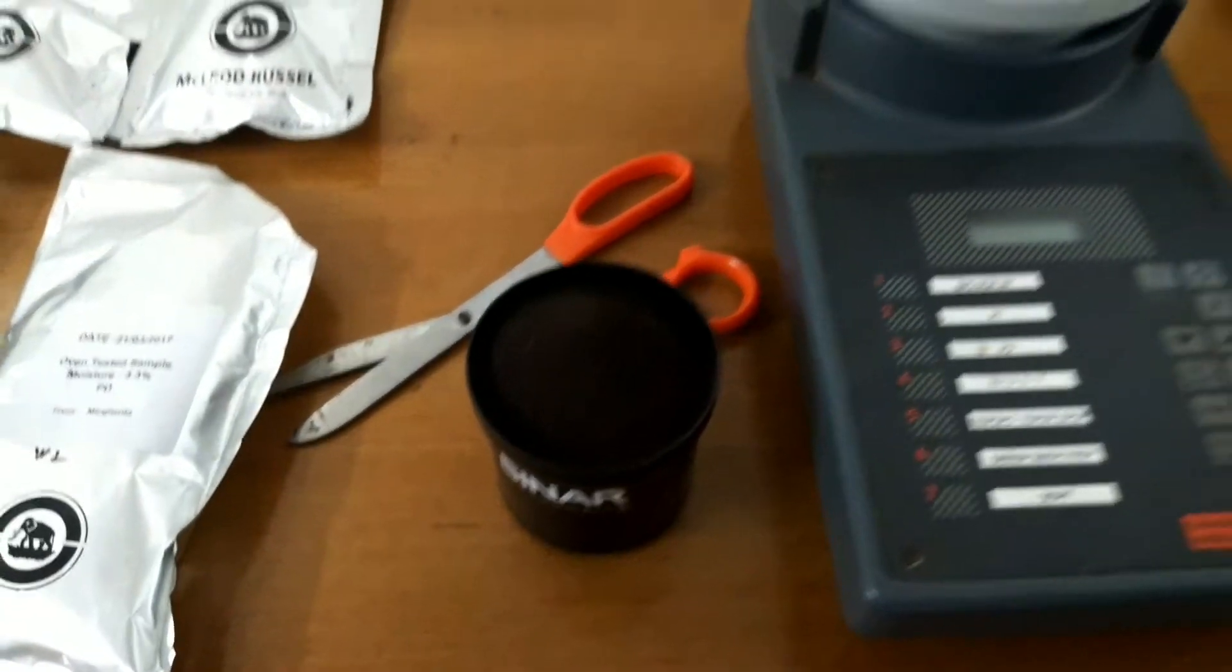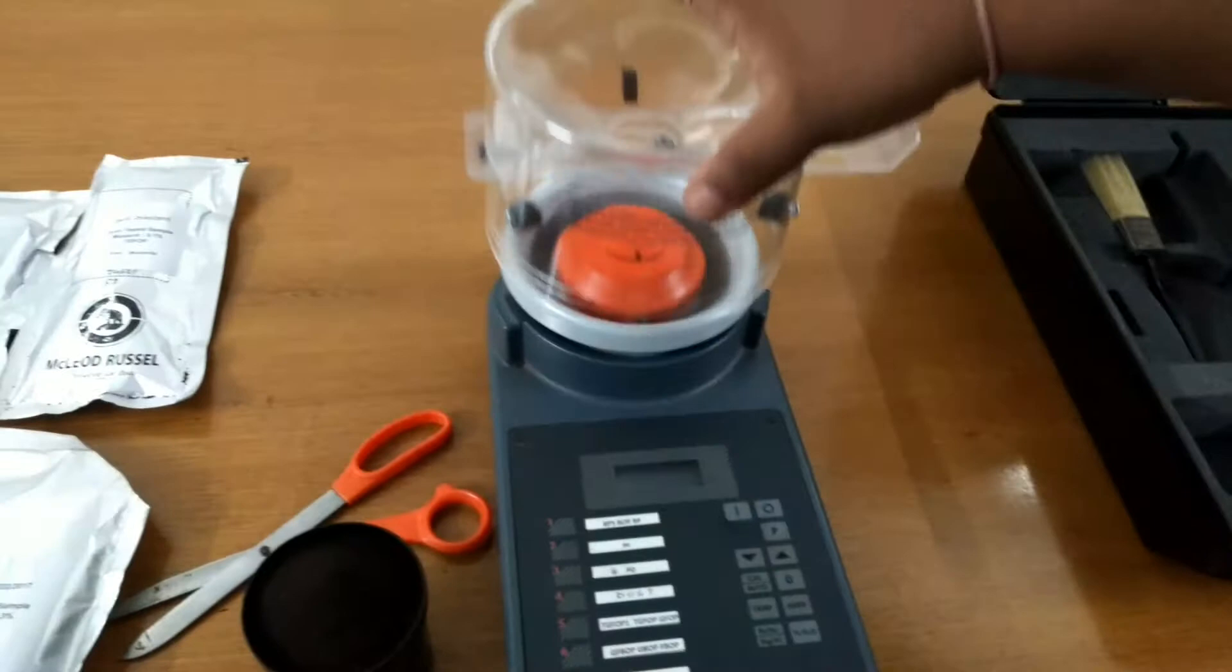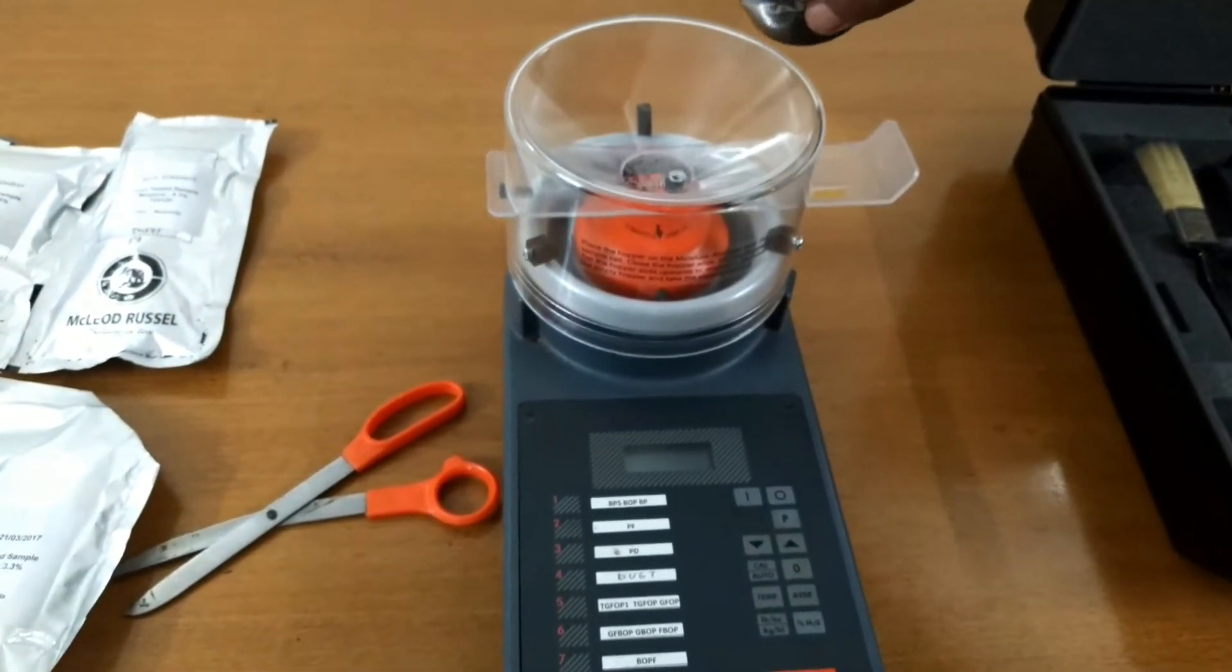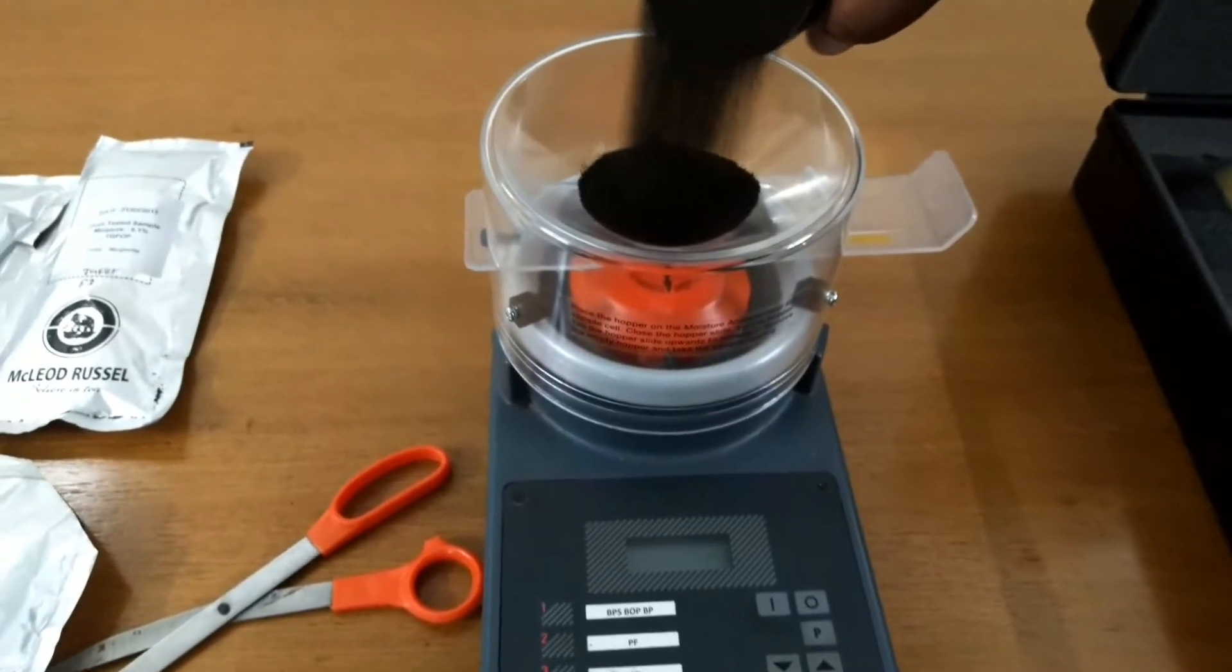After this, put the loading hopper to the machine, take the T samples, and fold it slowly into the hopper.